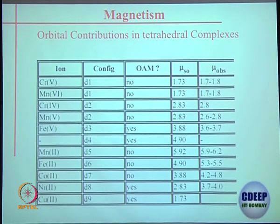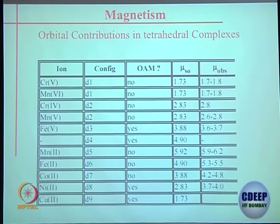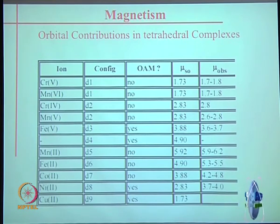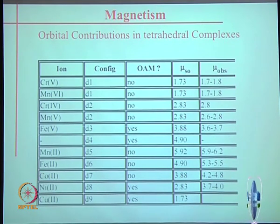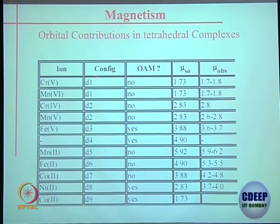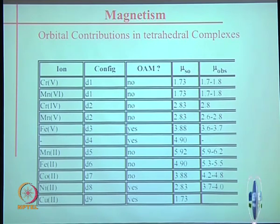The same is true for tetrahedral complexes — once again it is e and t2. The e configuration usually will not give you any unsymmetrical filling, so e is not going to give you orbital angular momentum, but t2 can. For d1 in octahedral it is t2g1, so orbital angular momentum is possible. d1 for tetrahedral is e1 — the splitting is between e and t2.